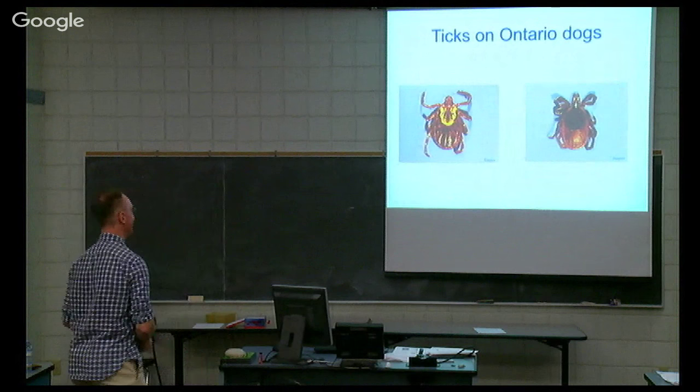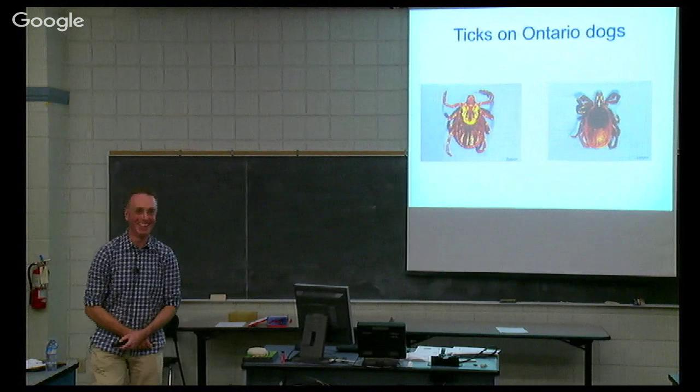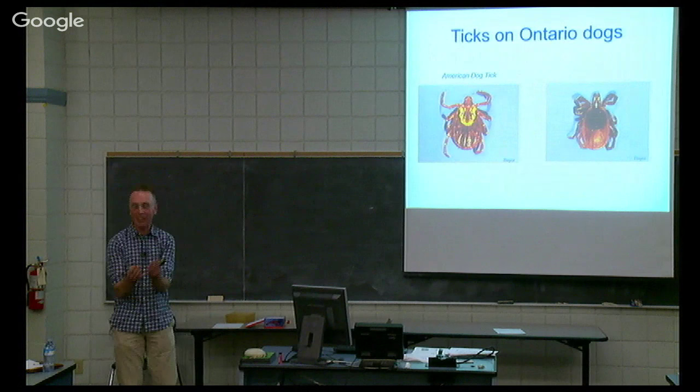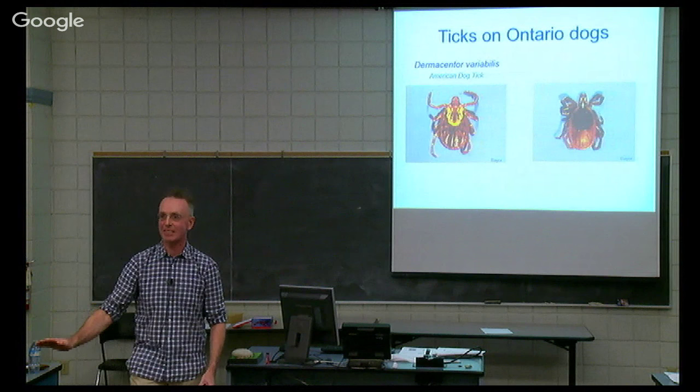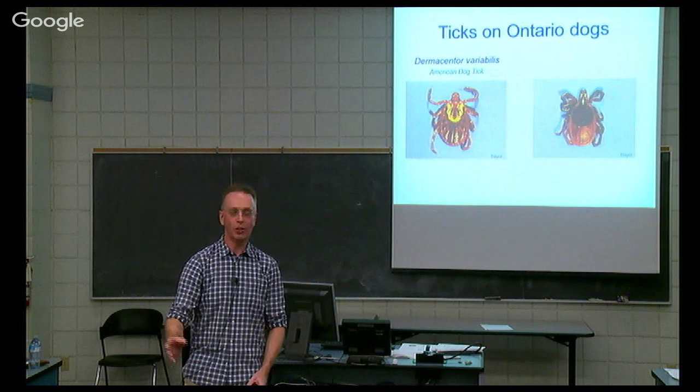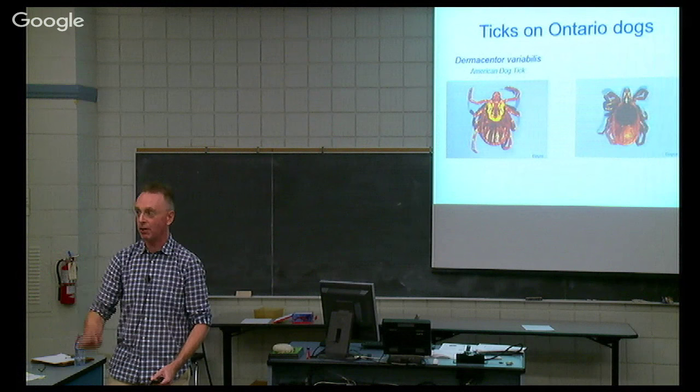On the left, the scutum is multicolored — ornate. As soon as you see that, you know that essentially here in Ontario there is only one tick it could be: the American dog tick, Dermacentor variabilis. As far as Lyme disease is concerned, it plays no role whatsoever. So if you pull this tick off either your dog or yourself and you see that multicolored structure, you don't even have to have nightmares about Lyme disease because it's not possible.